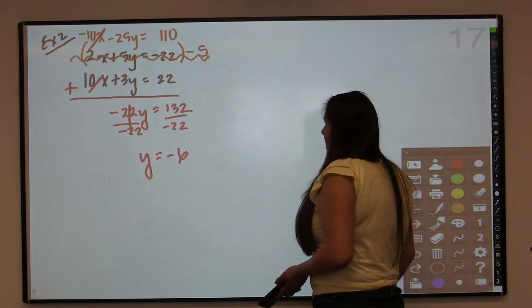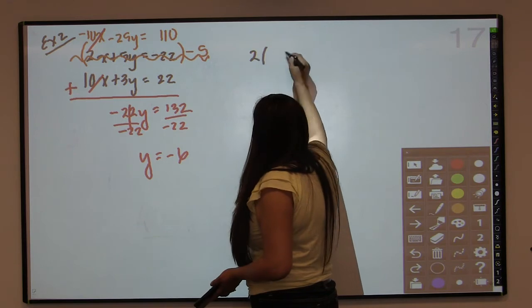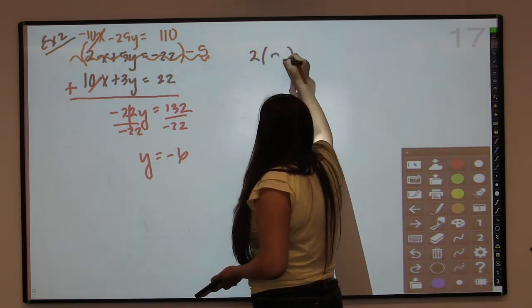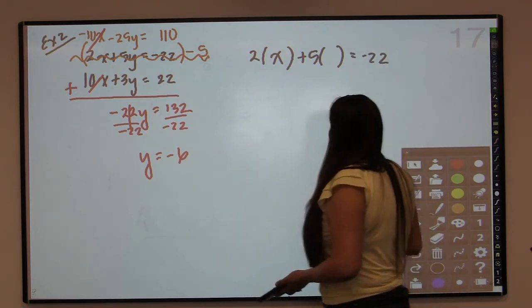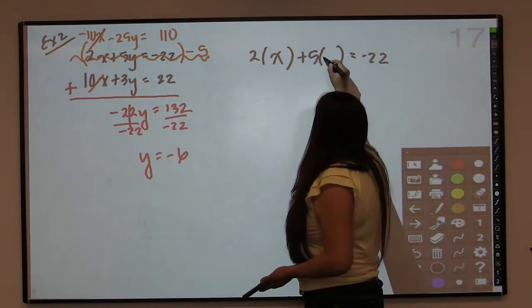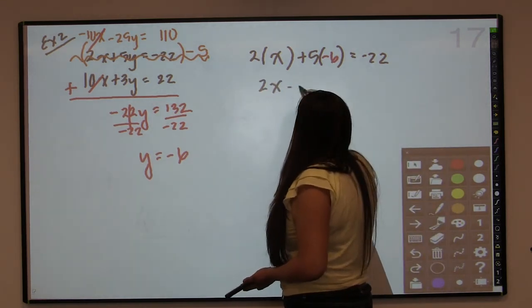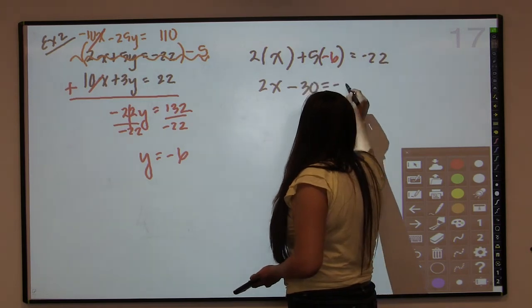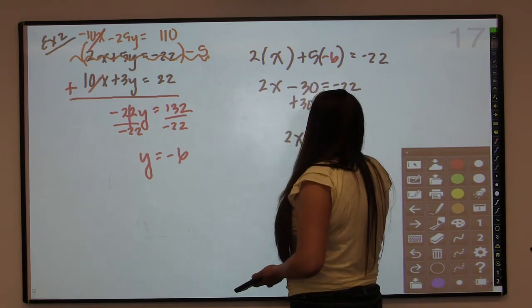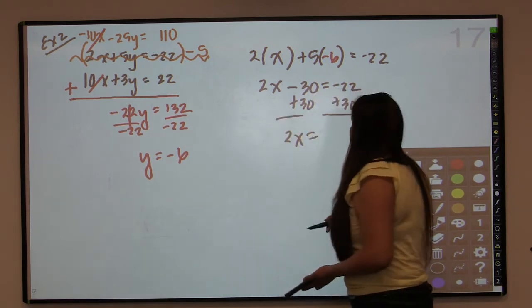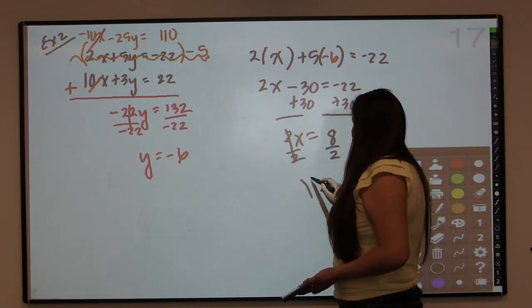And like before, we are going to plug that back in. It doesn't matter which equation you plug it into. So 2x plus 5y equals negative 22 was the original equation. And we know that y is negative 6. So we plug that in for y and then continue to solve. So 2x minus 30 equals negative 22. Add 30 to both sides. 2x equals 8. Divide by 2, and x equals 4.